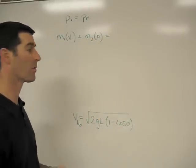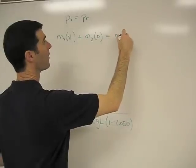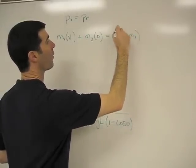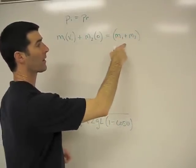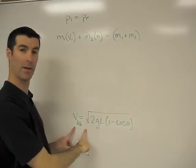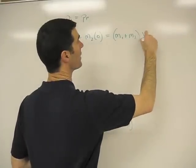And then after the two combine, the m1 plus m2, sort of like one unit, and they're going the final velocity, which we found down here, which is v sub bb.